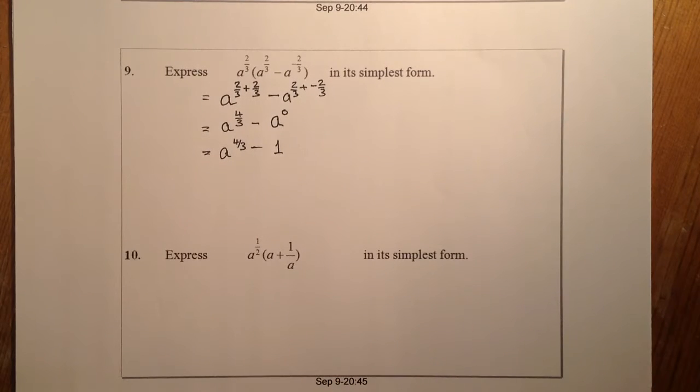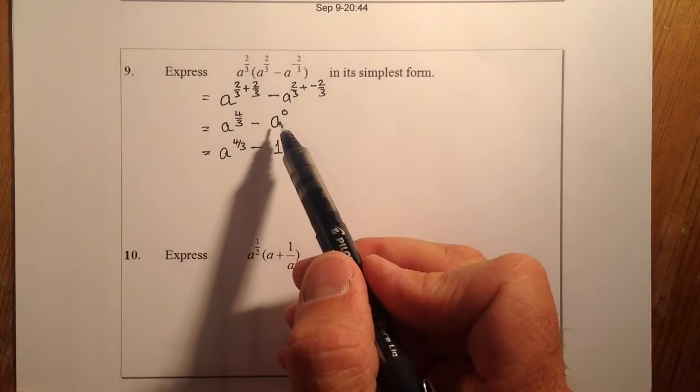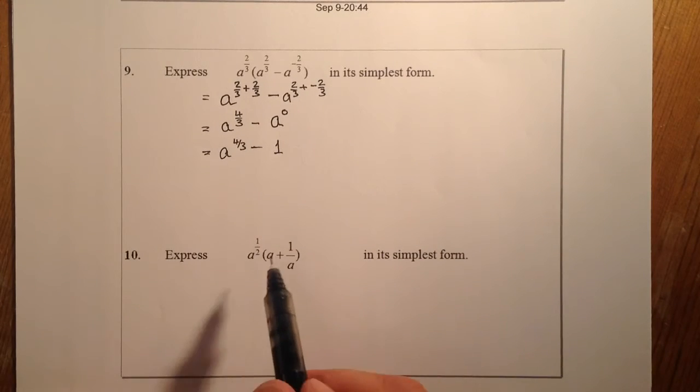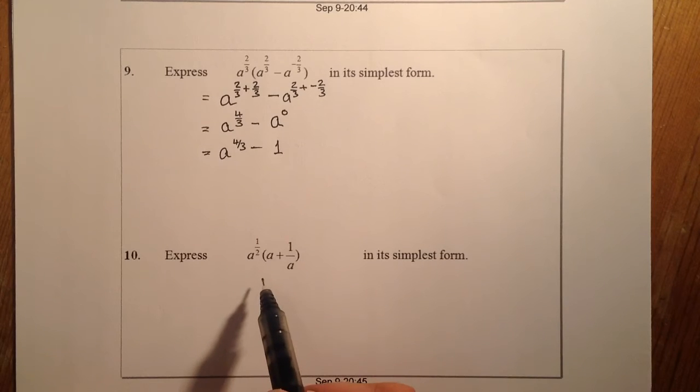So I'm multiplying out brackets, adding the indices when we're multiplying, and remembering we've got a to the power of 0, and that equals 1. Okay, so we're on to question 10. Same thing again, we're going to multiply out this bracket.